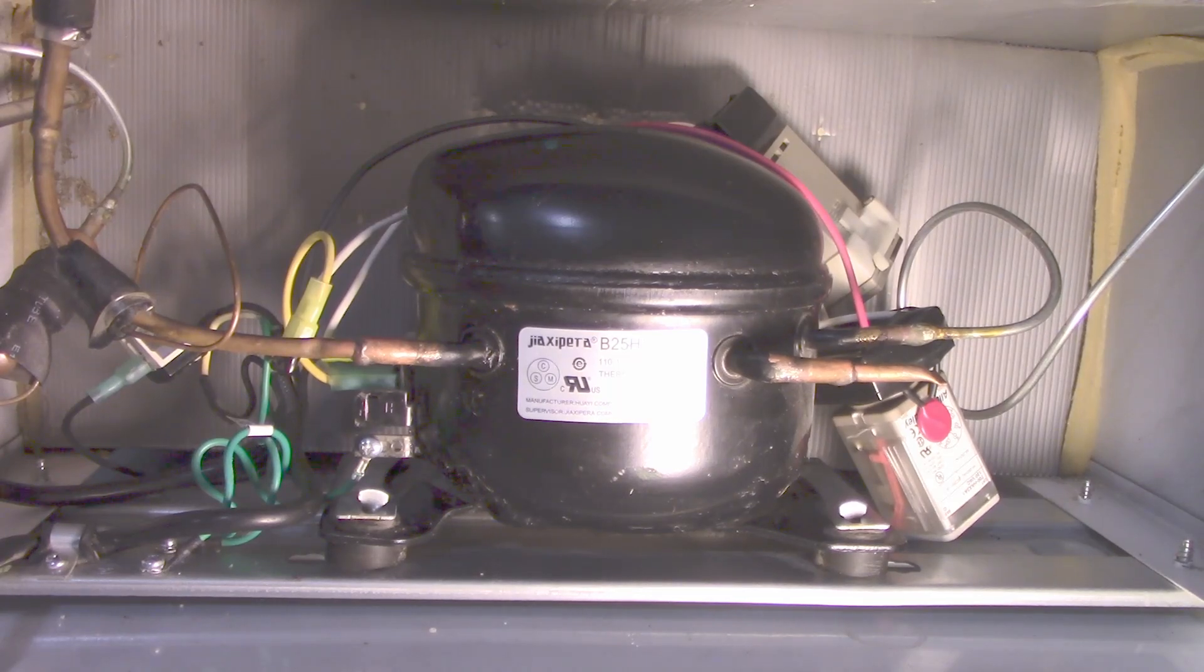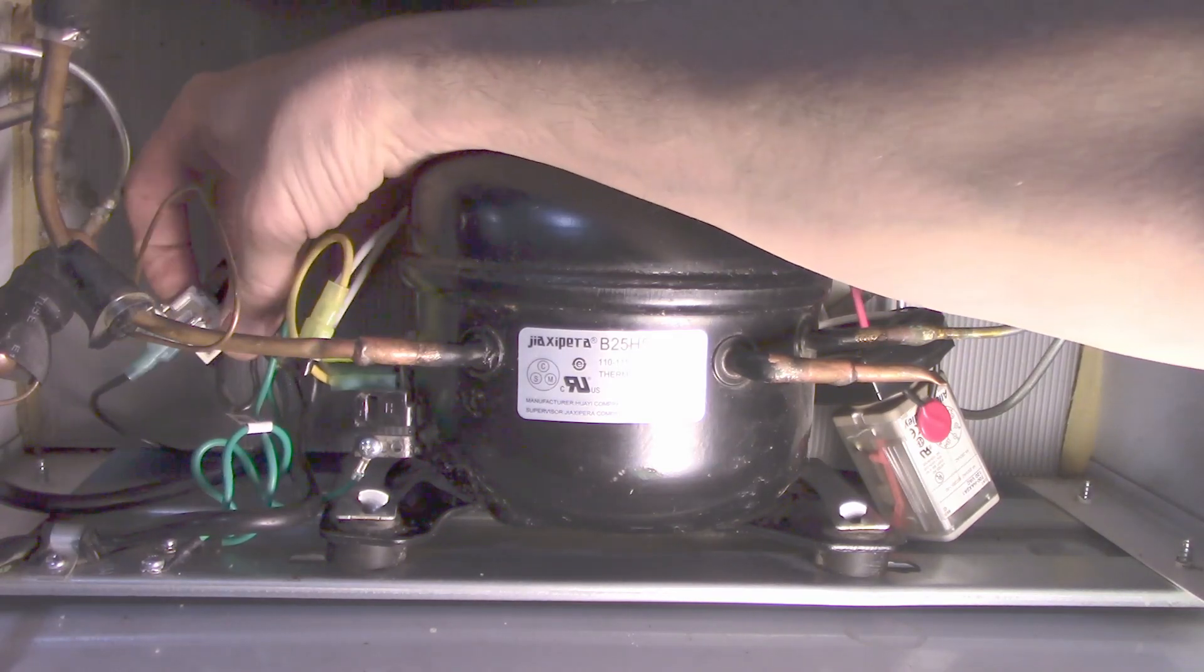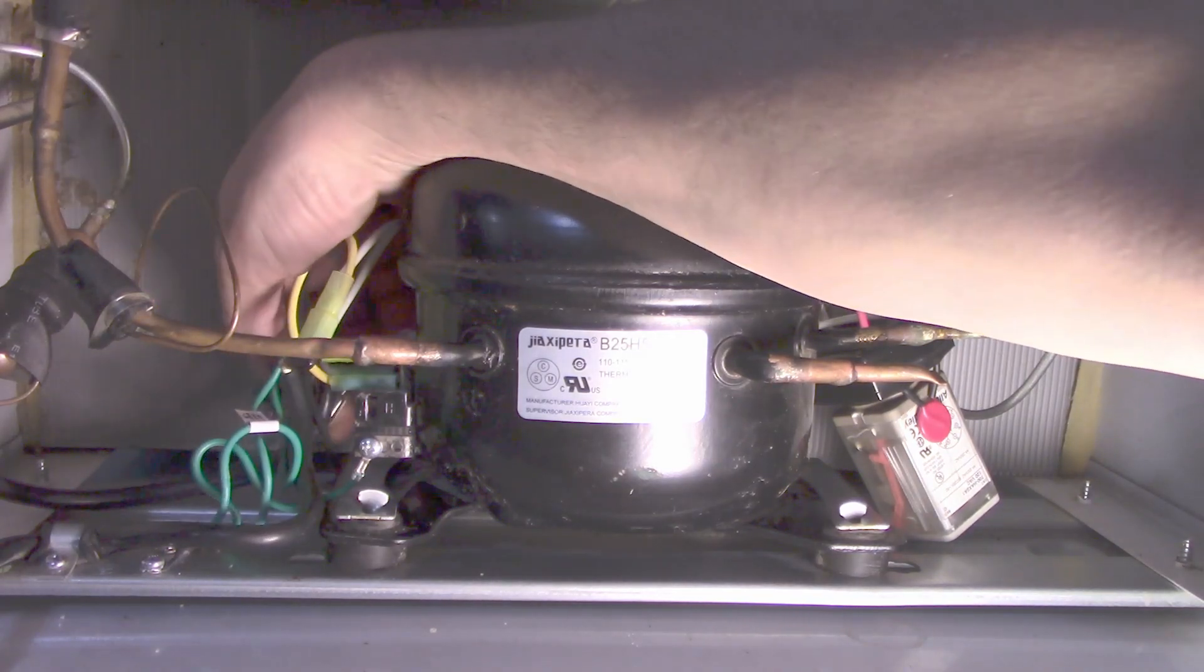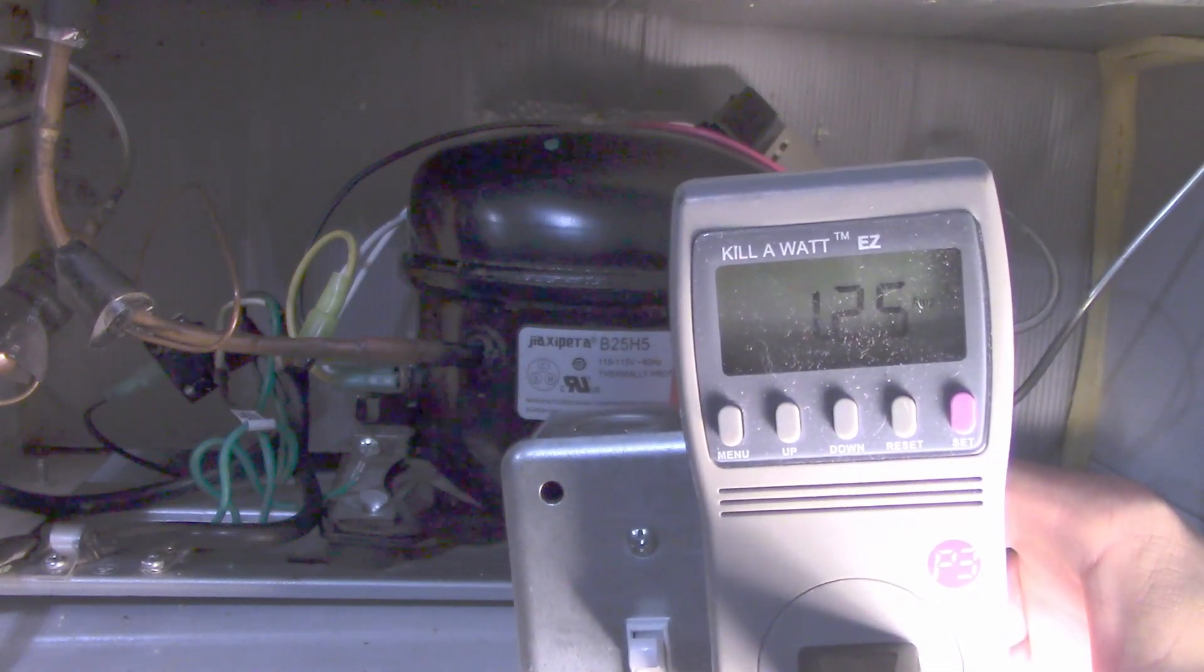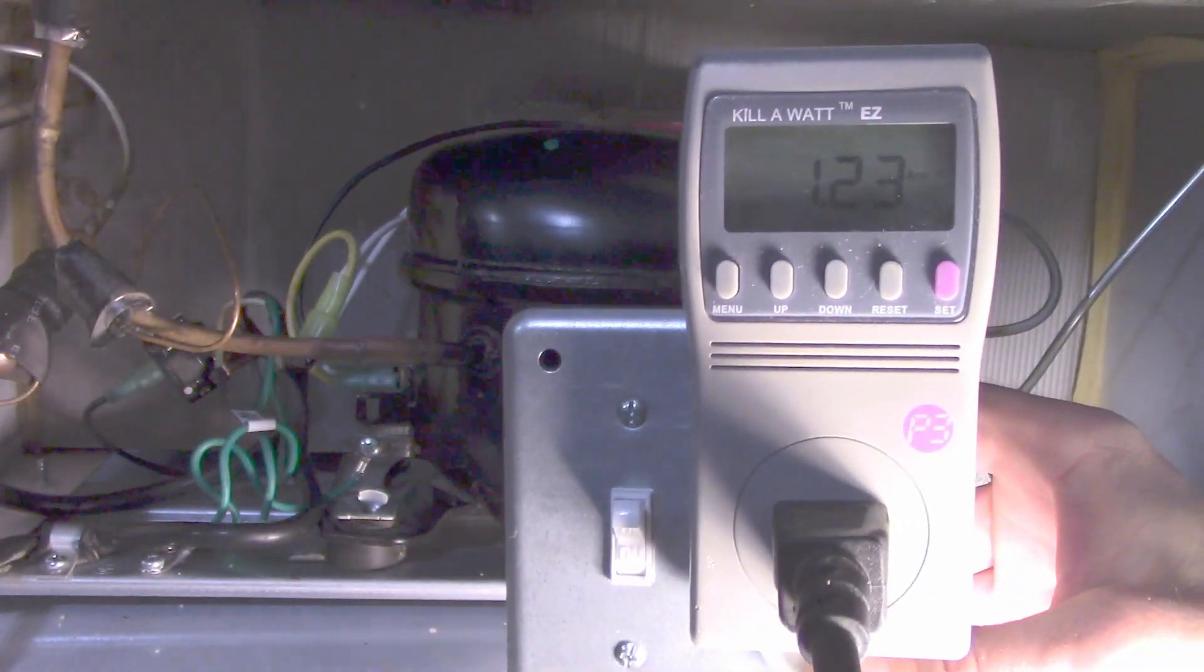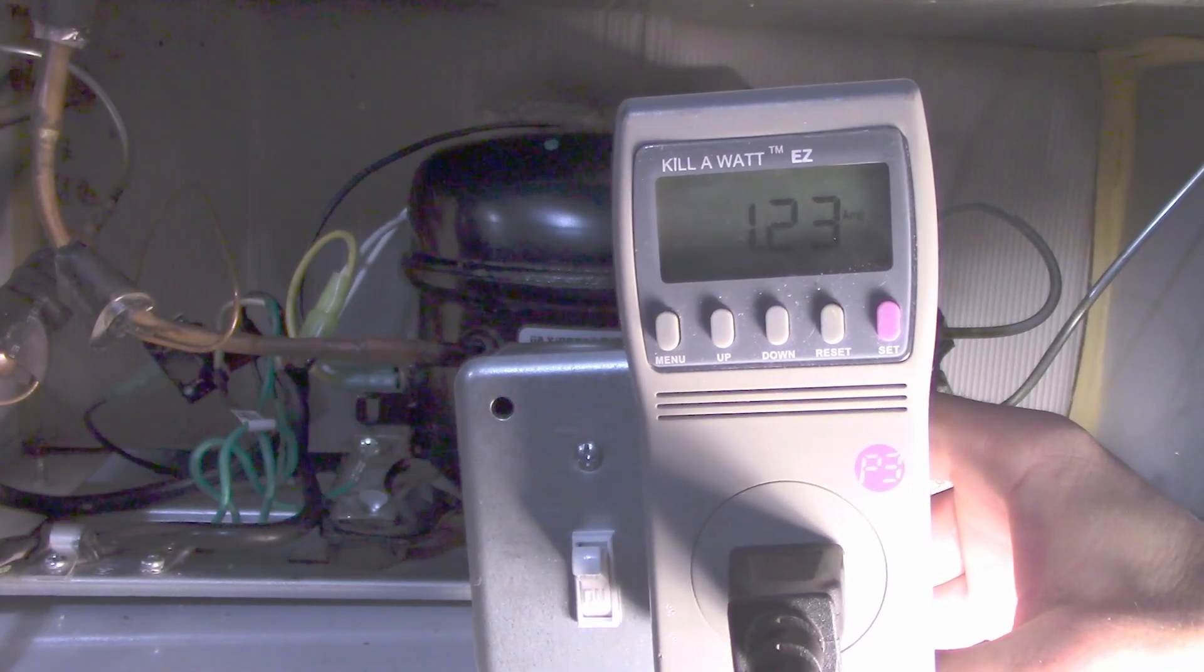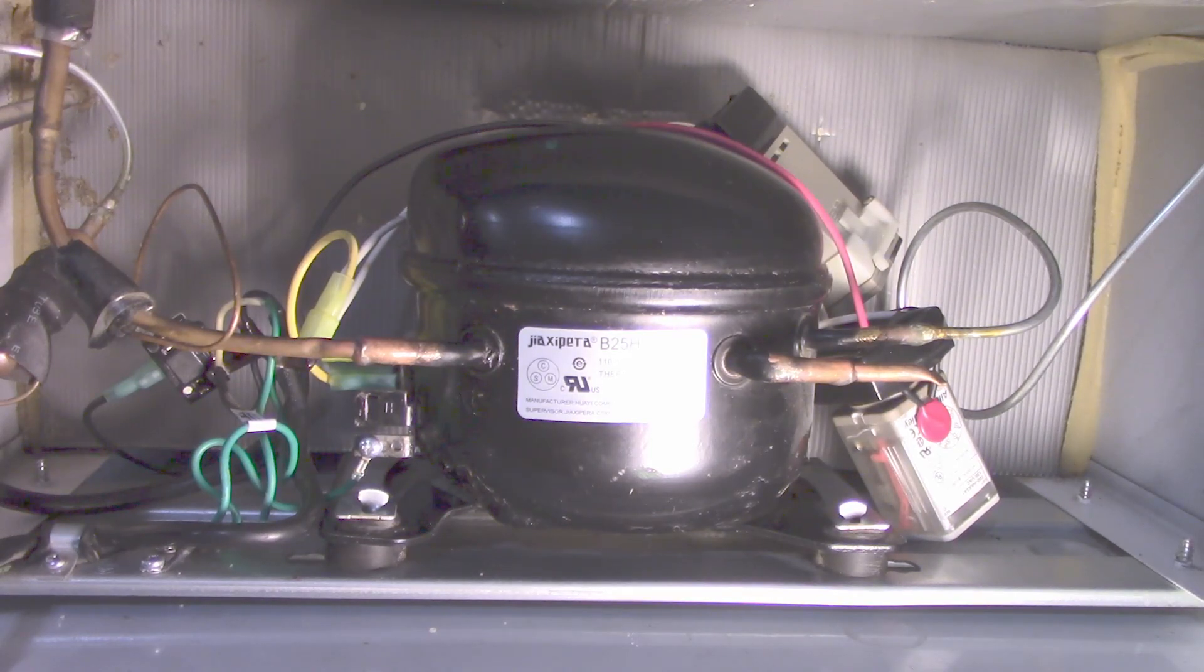All right, so I've got everything kind of cobbled up in here, nothing's touching anything. The only live part I have exposed is right here, the thermal overload, and I'll probably wrap that with tape just to be safe. So here we go. And it's running. Here's the amp reading, if you can see that, 1.25 amps. It's running good. Let's wipe that off so you can see it. Now it's down to 1.23 amps.